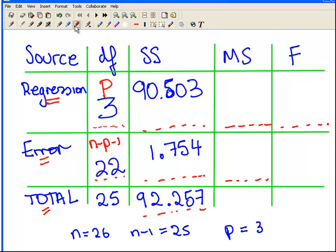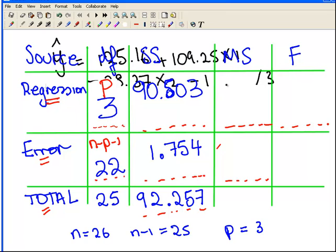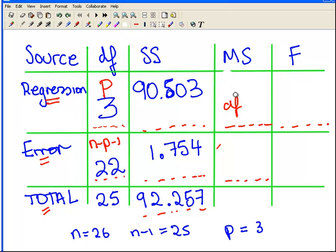Now, the mean squares are the sums of squares divided by the degrees of freedom for both cases. So this is going to be 90.503 divided by 3. When I divide that down, it is 30.167. Now likewise, I have to do the same thing for the mean square for error. I divide 1.754 by 22.